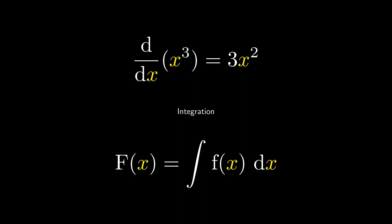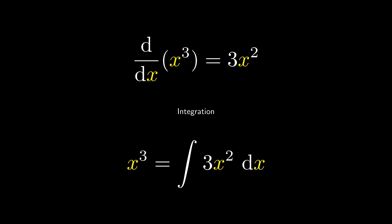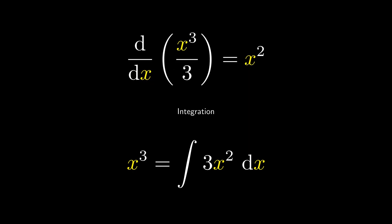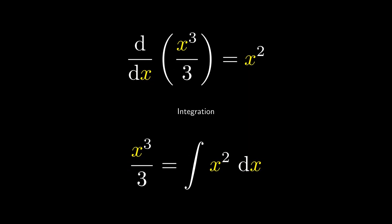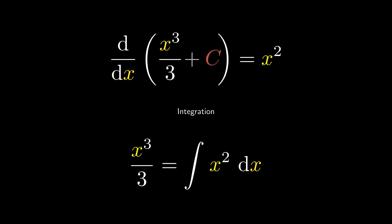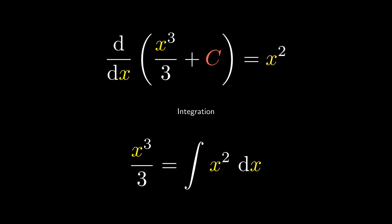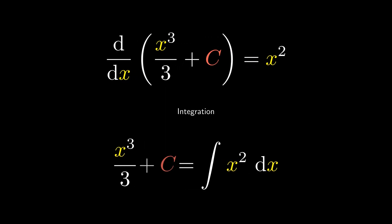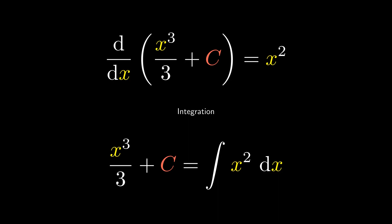Likewise, when we integrate 3x squared, we'll obtain x cubed. Dividing by 3 on both equations, we have the integral of x squared equals to x cubed over 3. And strictly speaking, this is also true when we add any arbitrary constant c. This is known as the arbitrary constant of integration.